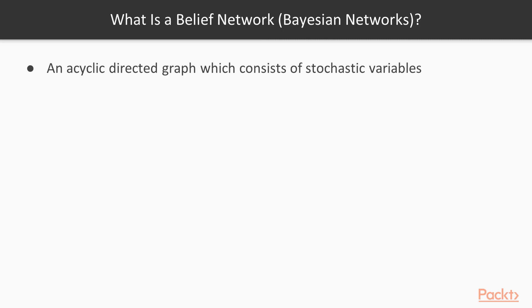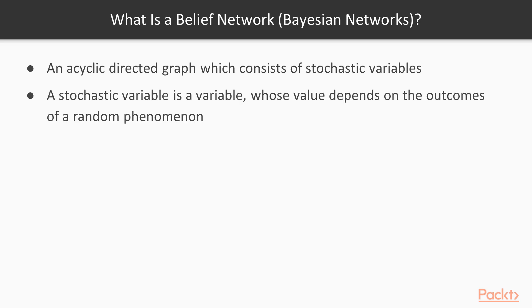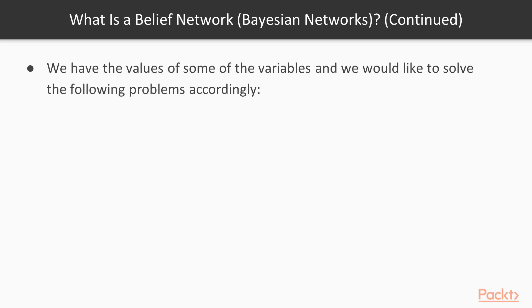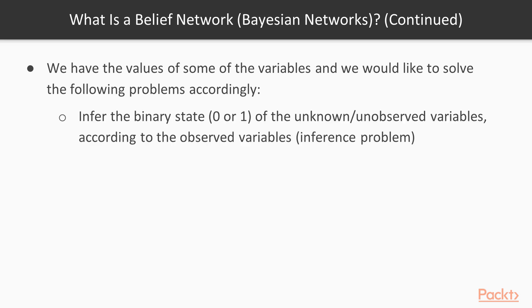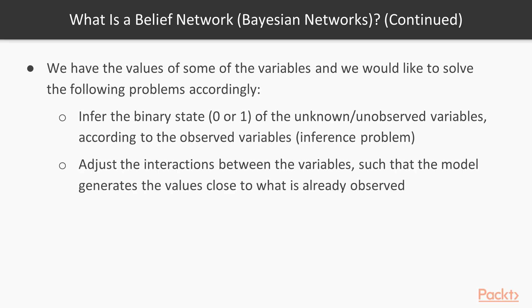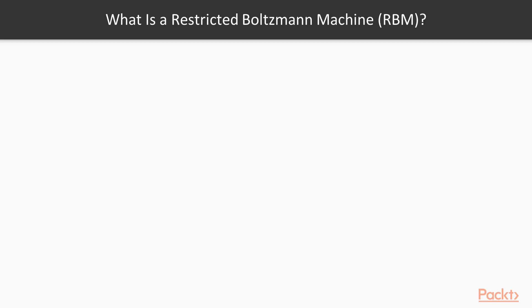So what is a belief network, or a Bayesian network? A belief network is an acyclically directed graph which consists of stochastic variables. A stochastic variable is a variable whose value depends on the outcomes of a random phenomenon. In belief networks, we have the values of some variables and we would like to solve the following problems. First, we would like to infer the binary state — 0 or 1 — of the unknown or unobserved variables according to the observed variables, which is called an inference problem. Second, we would like to adjust the interactions between the variables such that the model generates values close to what is already observed.